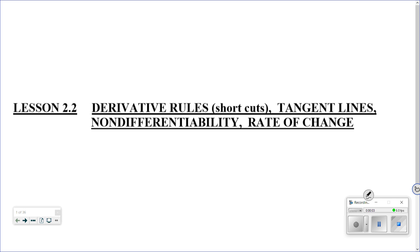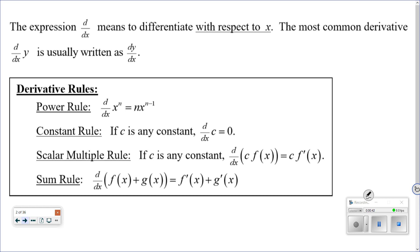This is really exciting. In section 2.1, we went through and found the limit using the limit definition of the derivative to find an equation for the derivative. Or if we wanted to find it at a specific point, we used the alternate form. What you should have noticed is that it's a really long, sometimes torturous process with a lot of algebra. Today we find out there are shortcuts you can use to find derivatives, so we don't have to always go through that super long process.